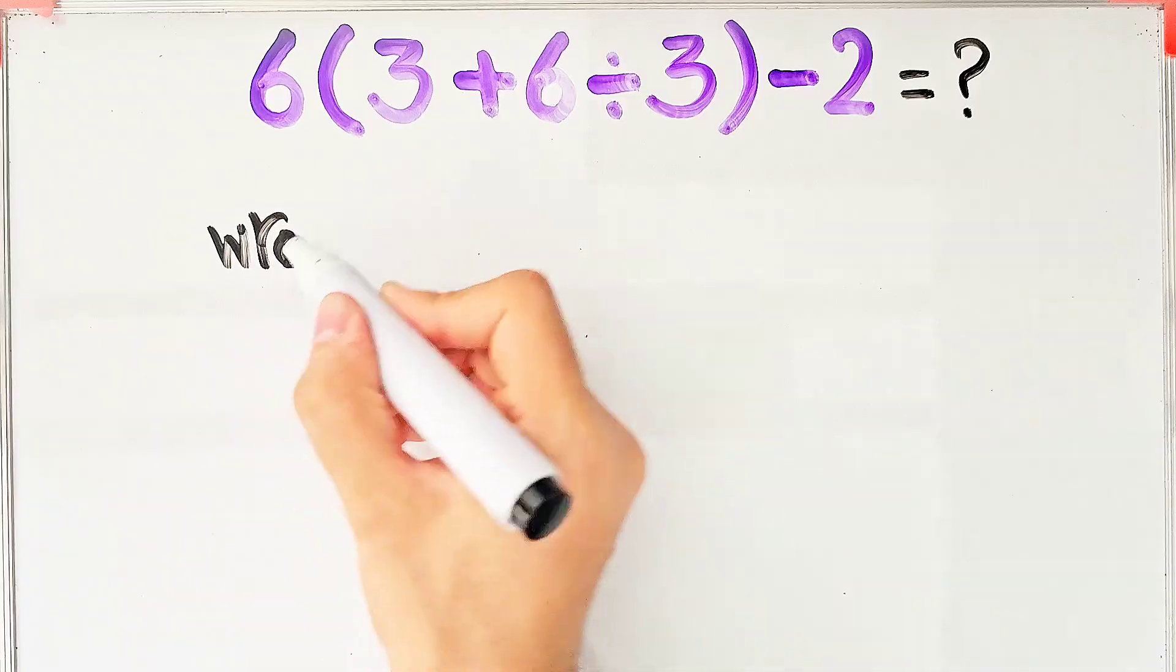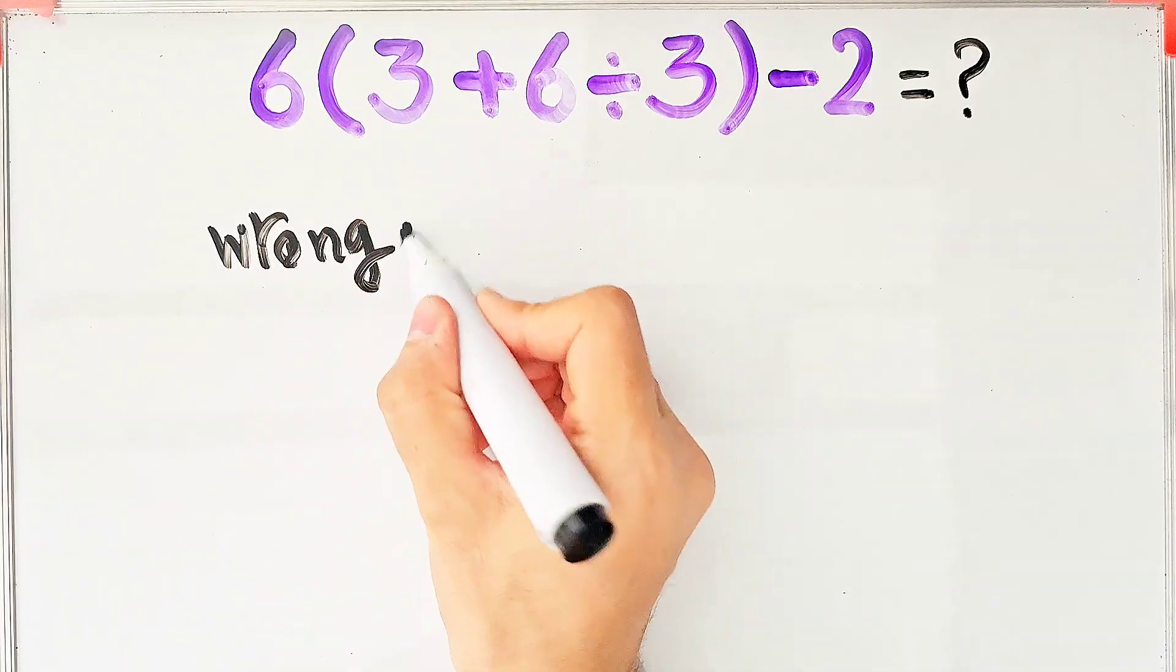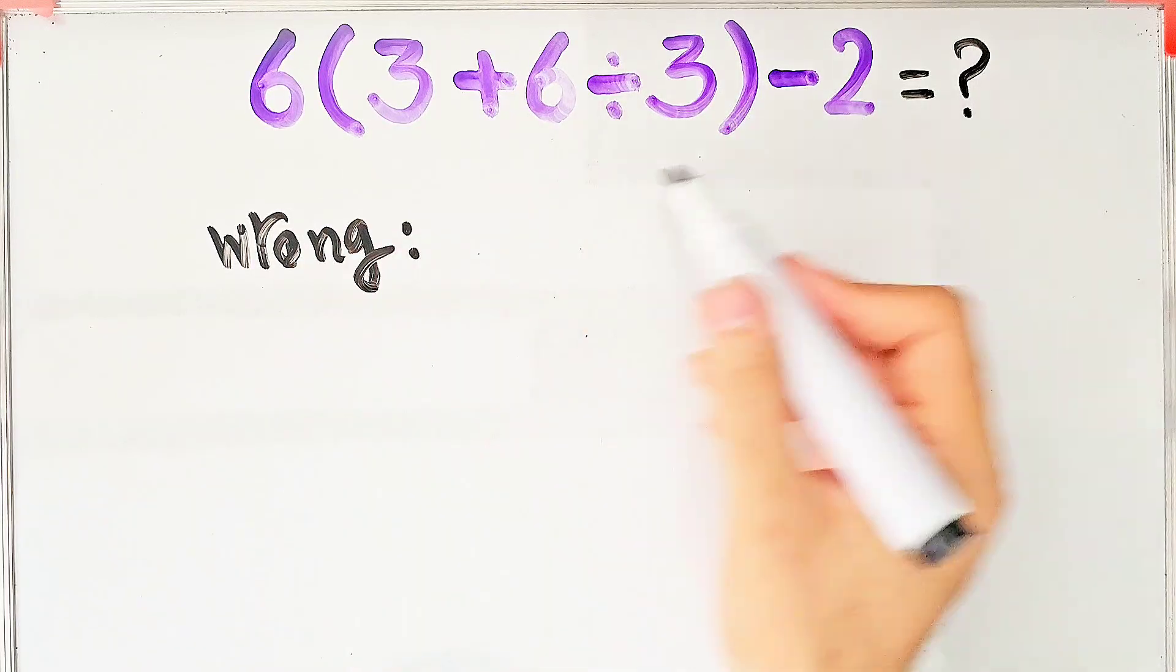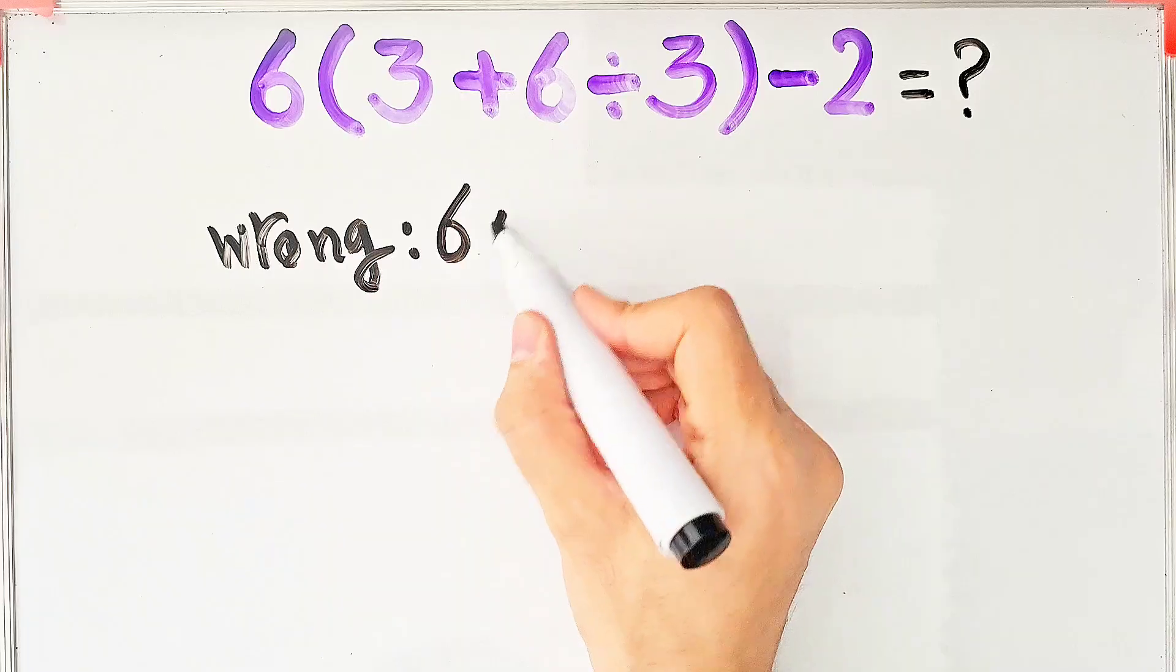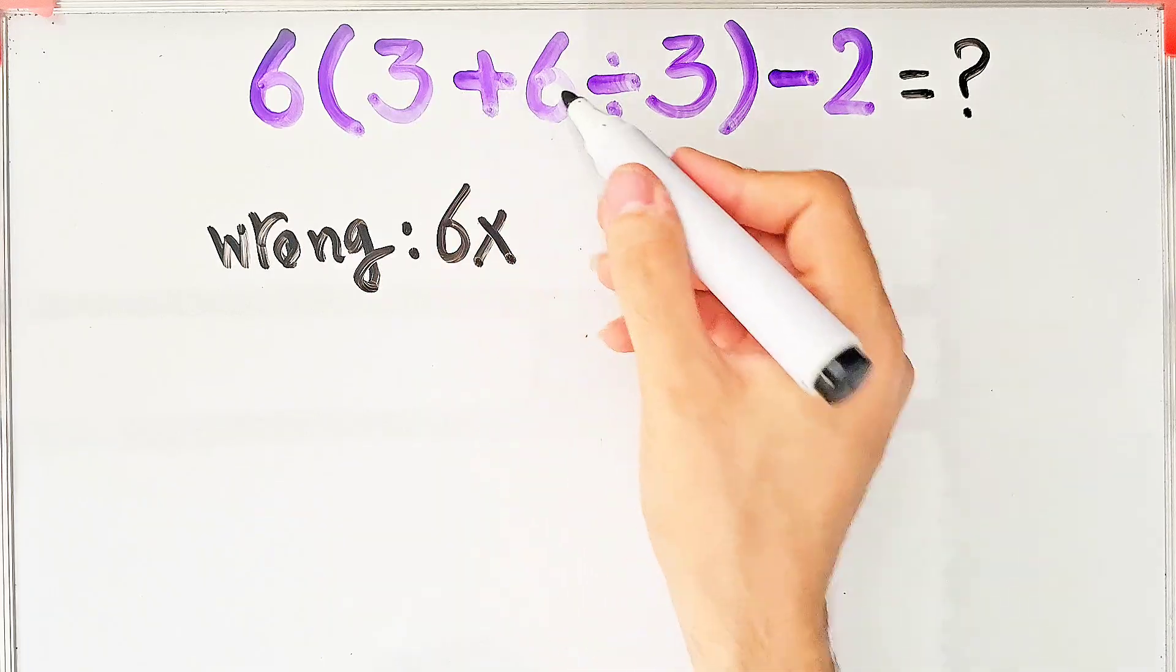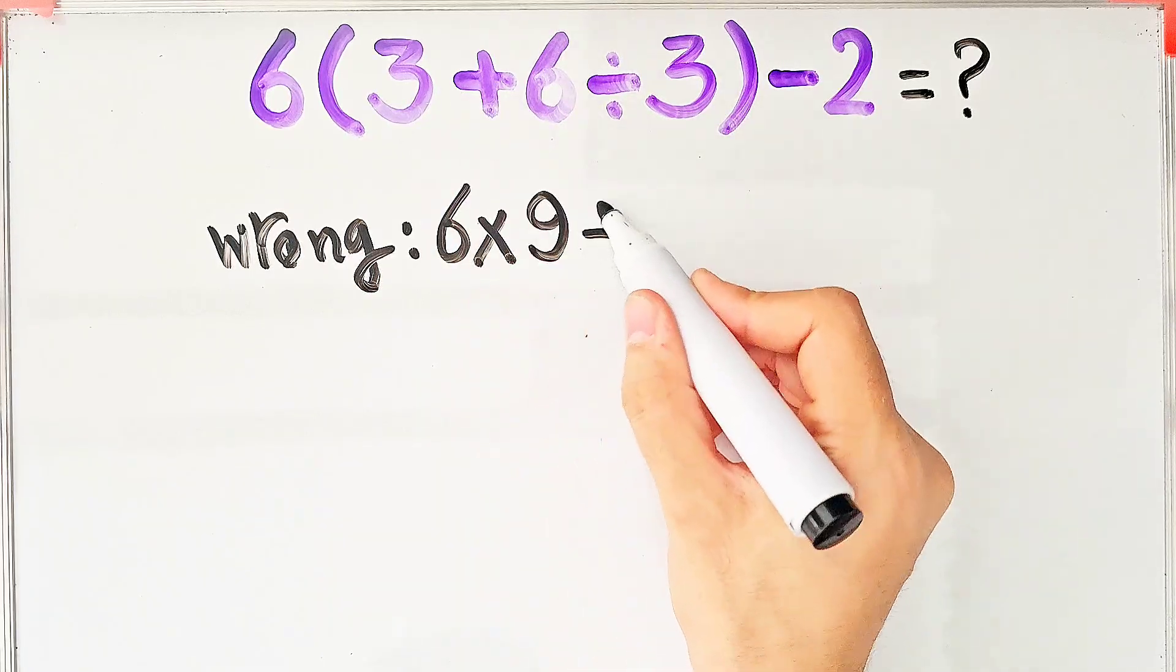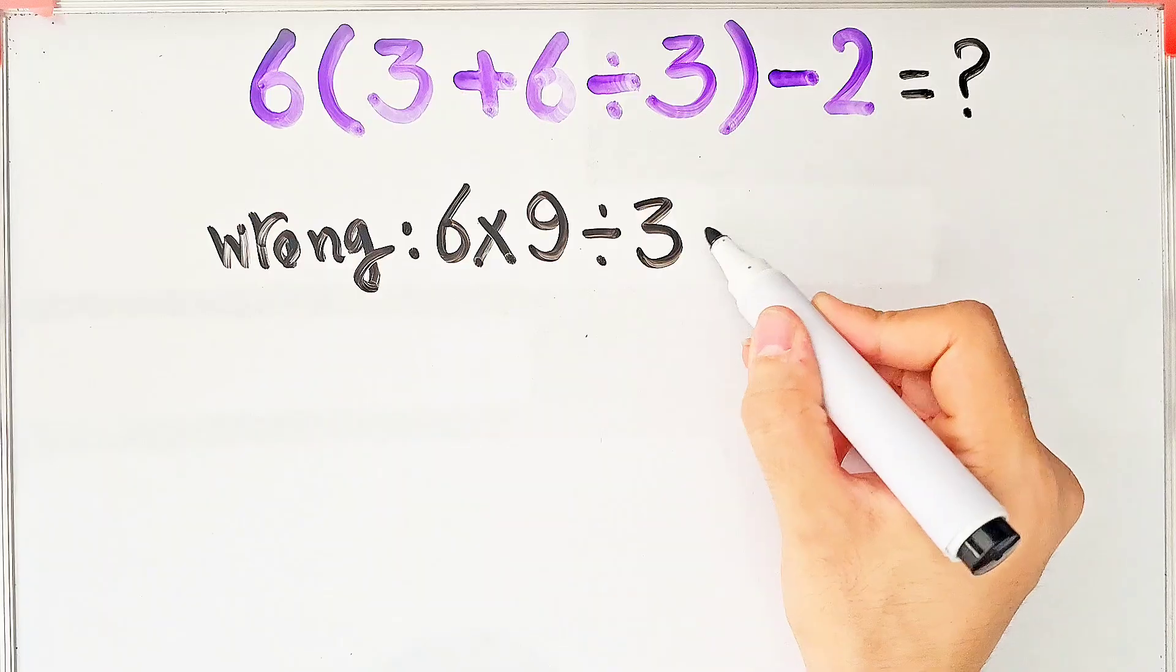In the wrong way of solving this question, some people start from the left side of the question and don't pay attention to the priority of the mathematical operations. 6 times 3 plus 6 that equals 9, then divided by 3, then minus 2.